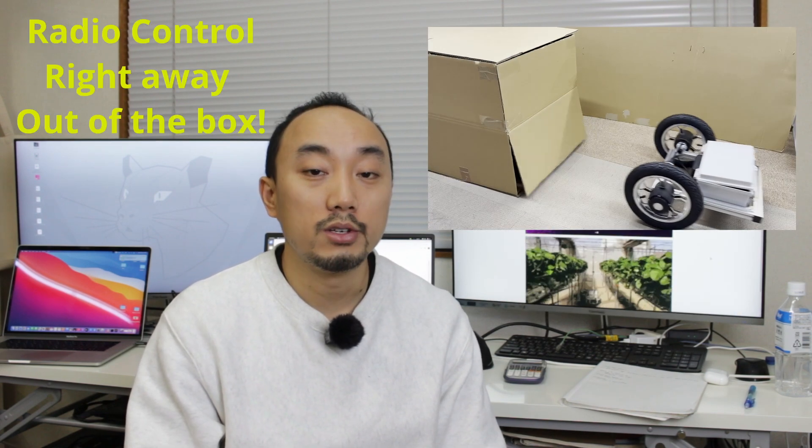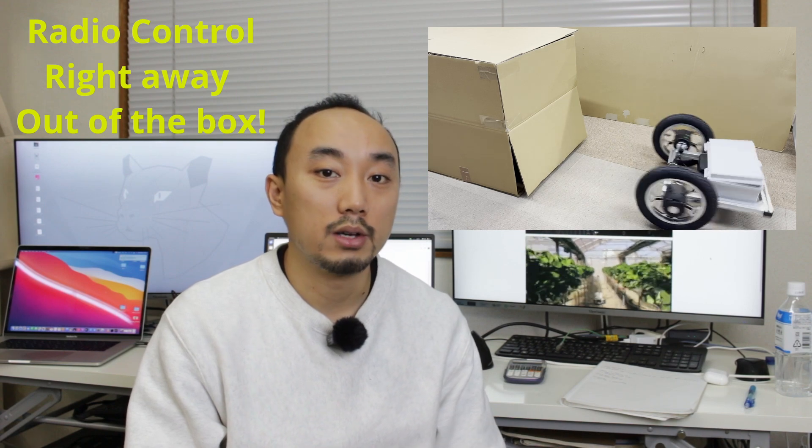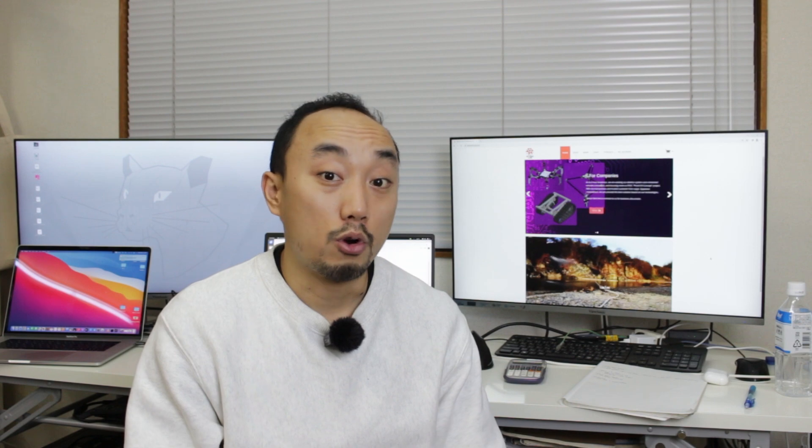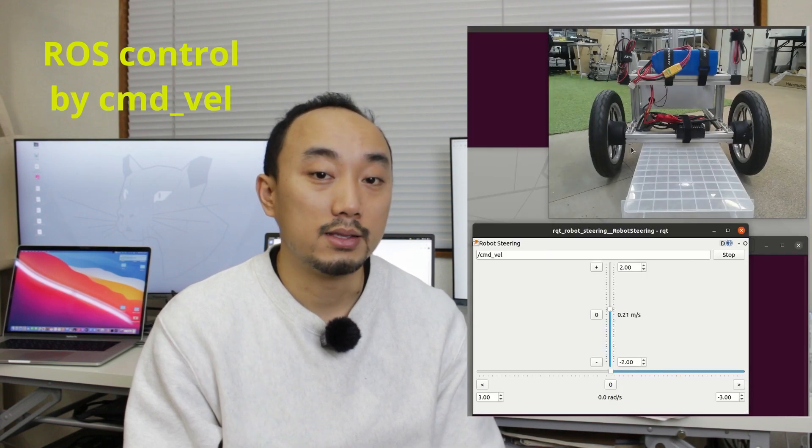Our AT Card Basic just works out of the box. You can grab the radio transmitter and control it right away once you plug in the battery, and of course you can control it by computer by sending the ROS command velocity. So even if your program crashes you can take control all the time to prevent it from hitting something.